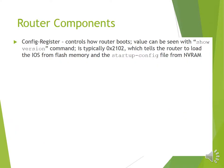There are certain components of the router config register which control how the router boots. The value can be seen with the 'show version' command, and is typically 0x2102, which tells the router to load the iOS from flash memory and the startup config file from NVRAM.